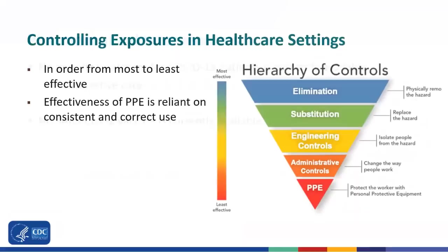As patients with infectious diseases are cared for in healthcare settings, eliminating the disease or substituting it with a non-hazardous option is not really possible. Hence, engineering and administrative controls and personal protective equipment are relied upon to reduce exposures. Engineering controls, such as maximizing use of physical barriers like glass or plastic windows, can potentially eliminate the need for personal protective equipment use in selected situations. Administrative controls include altering workplace practices, such as making ample use of telephone triage and telemedicine to reduce the numbers of patients going to healthcare settings.